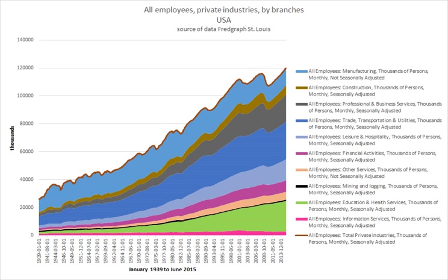According to Swedish law, there are three types of employment. Test employment, where the employer hires a person for a test period of six months maximum — the employment can be ended at any time without giving any reason, and this type can be offered only once per employer and employee combination. Usually a time-limited or normal employment is offered after a test employment. Time-limited employment, where the employer hires a person for a specified time, usually extended for a new period, with a total maximum of two years per employer and employee combination, after which it automatically counts as normal employment.